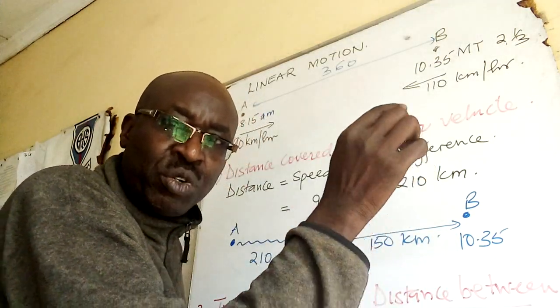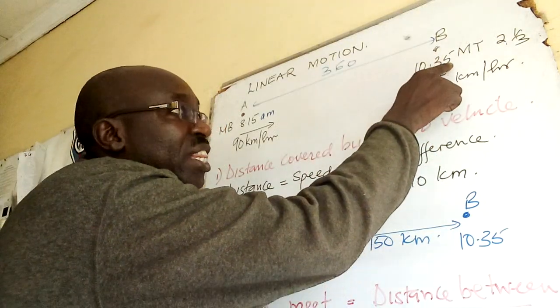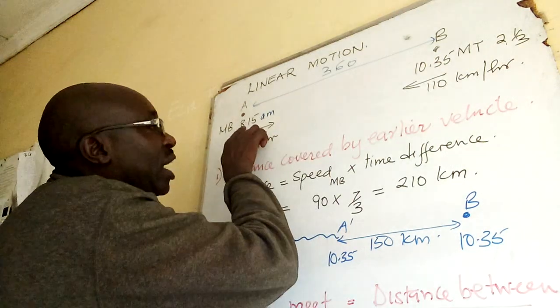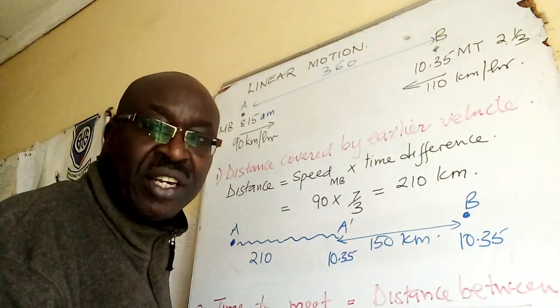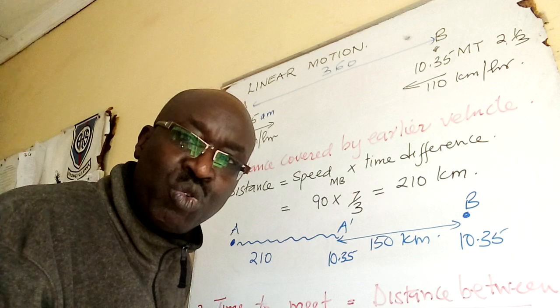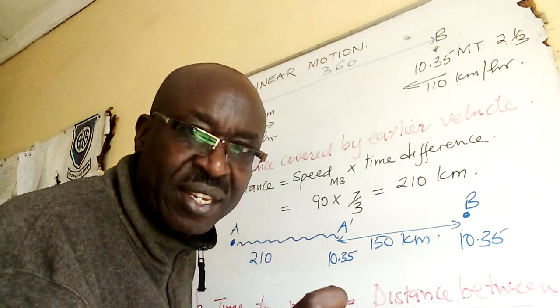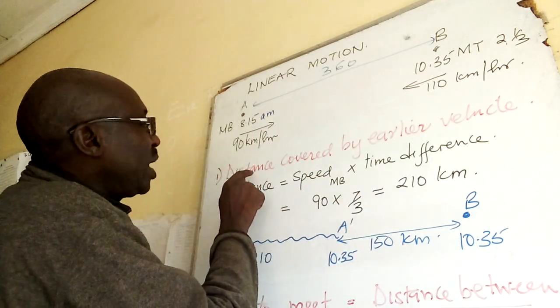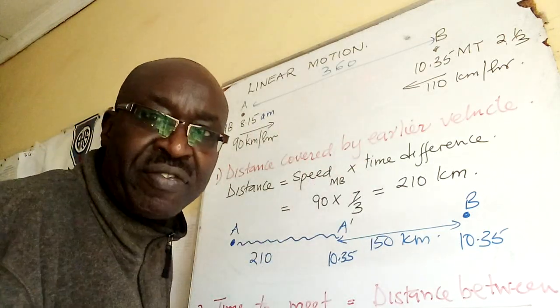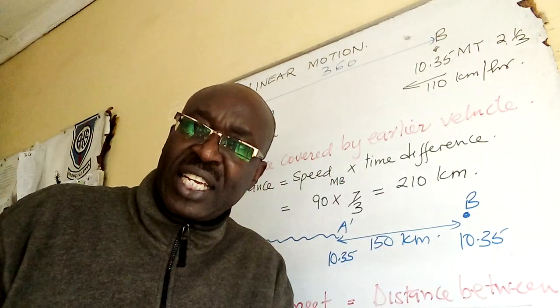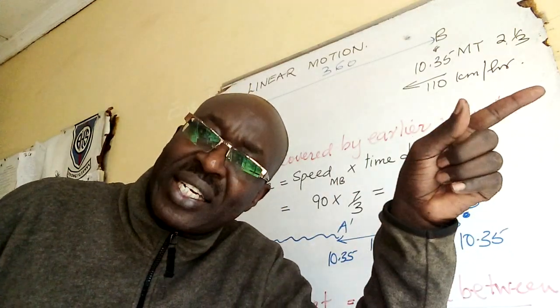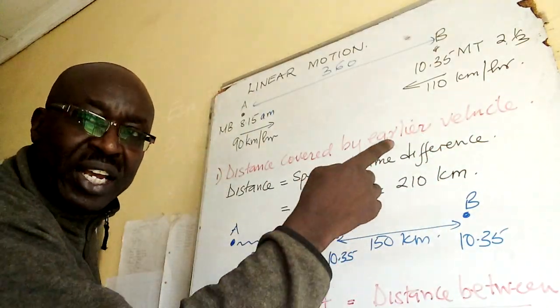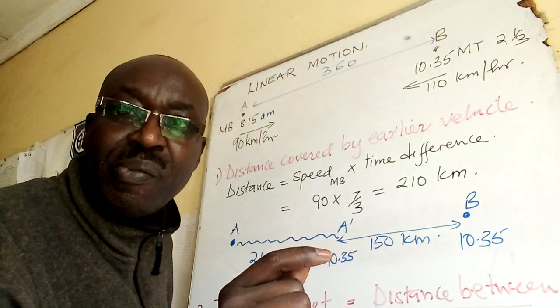So I can give you two versions. But if it gives you time of the day like 10:30, then when you subtract 8:15 you get what I'll be referring to as time difference. Major step number one: you always have to get the distance covered by the earlier vehicle.